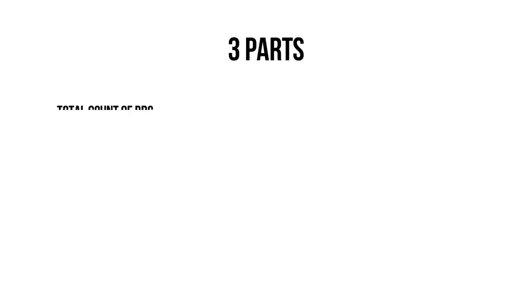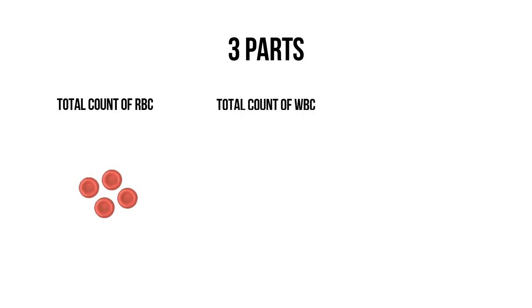The CBC test result has three parts: total count of RBC or red blood cells, total count of WBC or white blood cells, and total count of platelets.